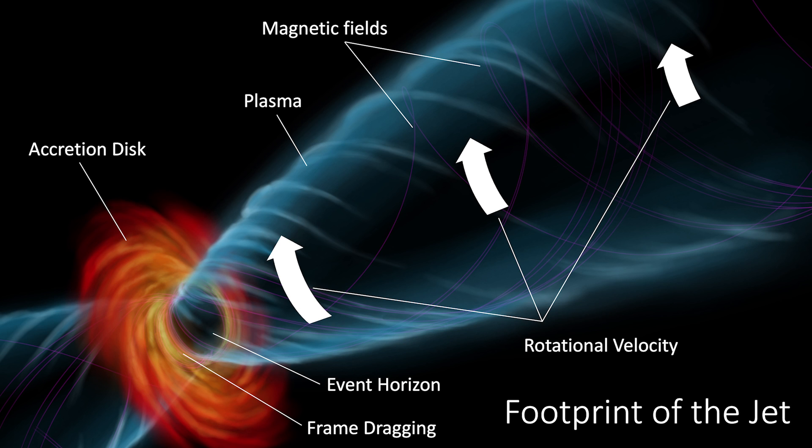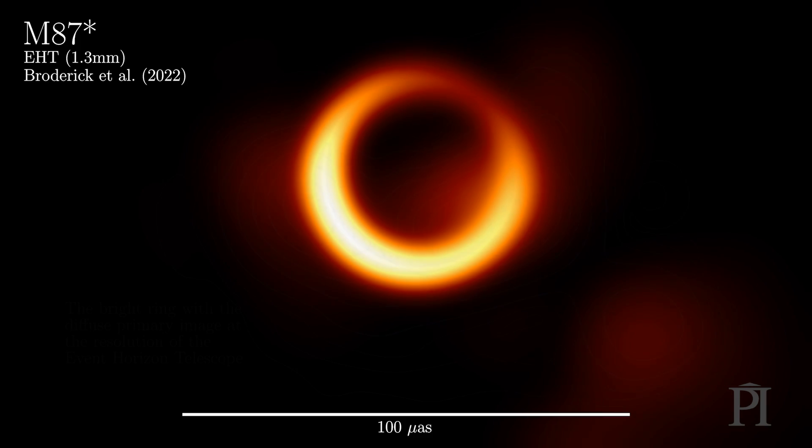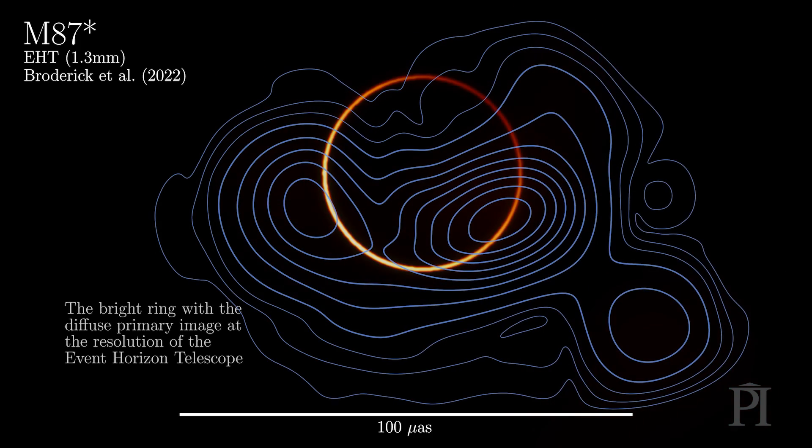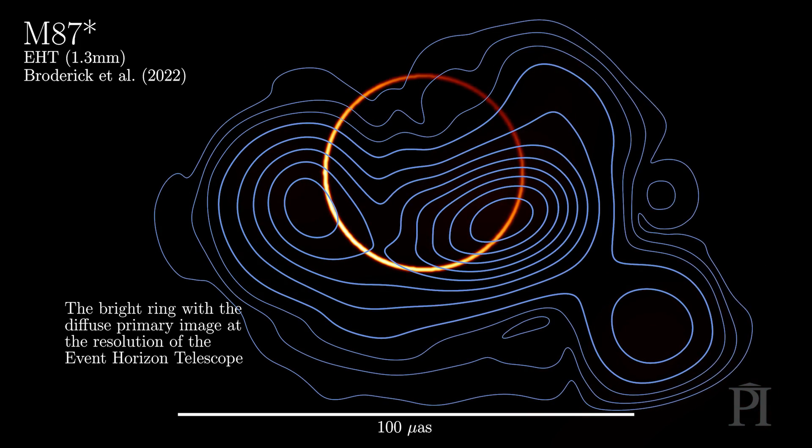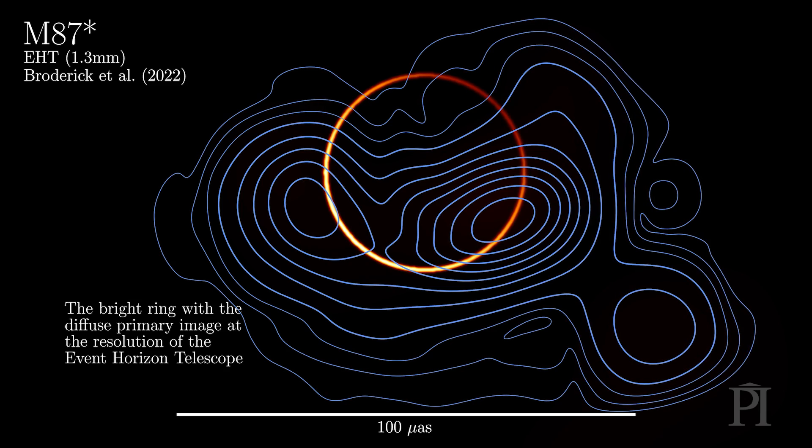Until now, we had been seeing the figure skater with her arms outstretched. We've been seeing the jet not rotate. But here we see that rotation at the very bottom. And now, because we can separate out what is the ring and what is the diffuse emission around the black hole, we are able to see the spring from which this jet originates.